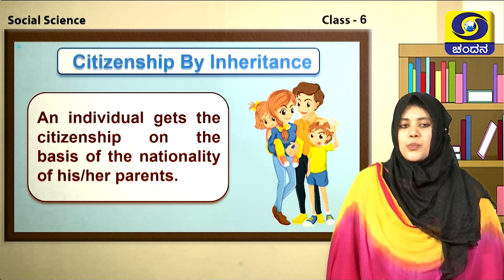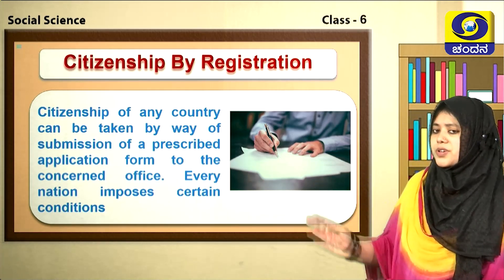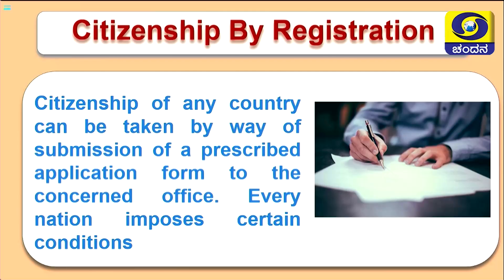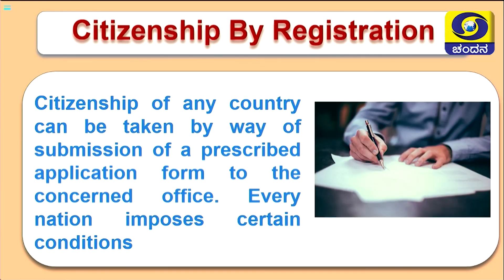Now let us move to the next method — citizenship by registration. A person who is filling a form represents this method. Citizenship of any country can be taken by way of submission of a prescribed application form to the concerned office. Every nation imposes certain conditions, and through this process a citizen can acquire citizenship by registration.